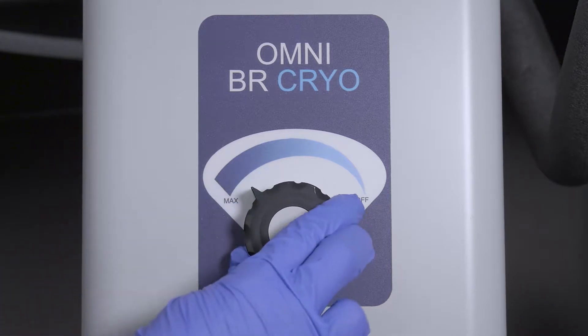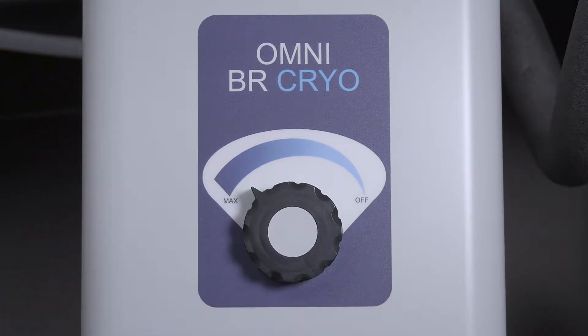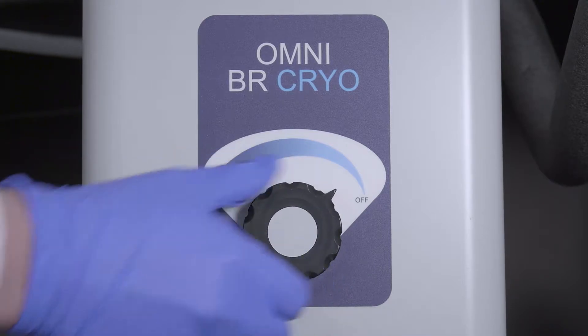Run dry air at the max setting for 30 seconds to purge the air lines. Return the control knob to the off position.